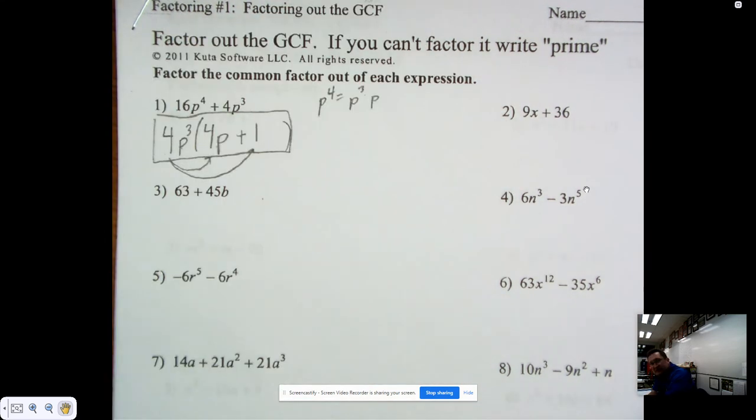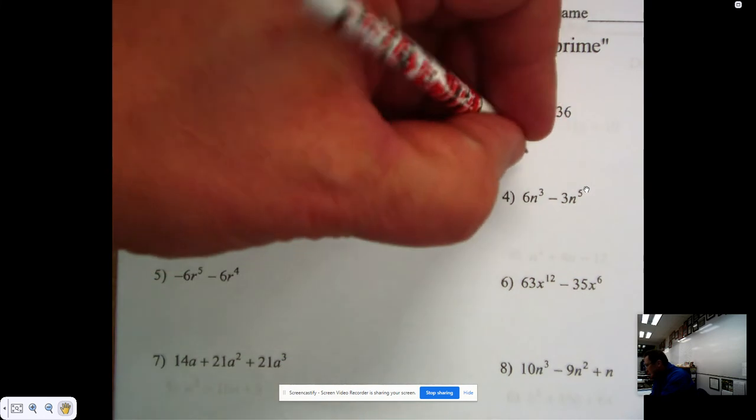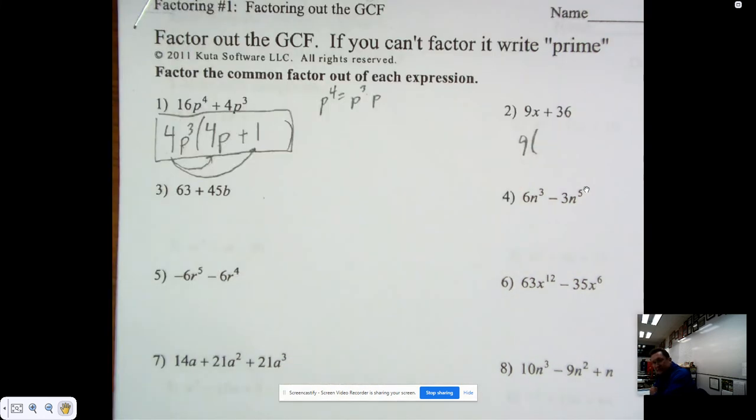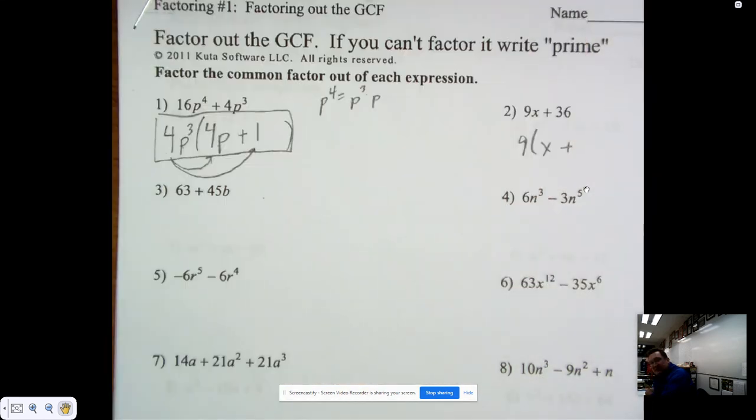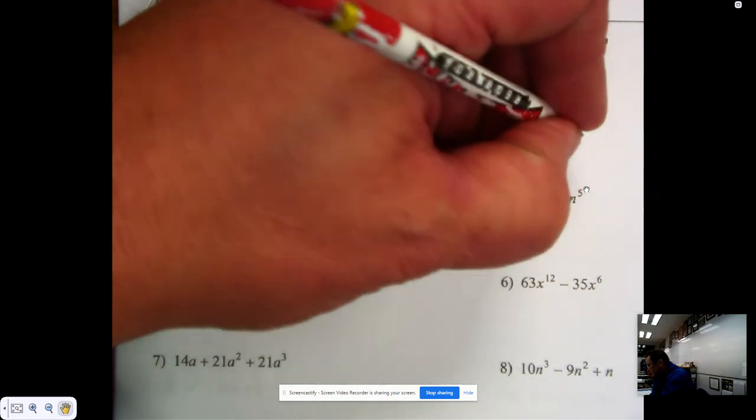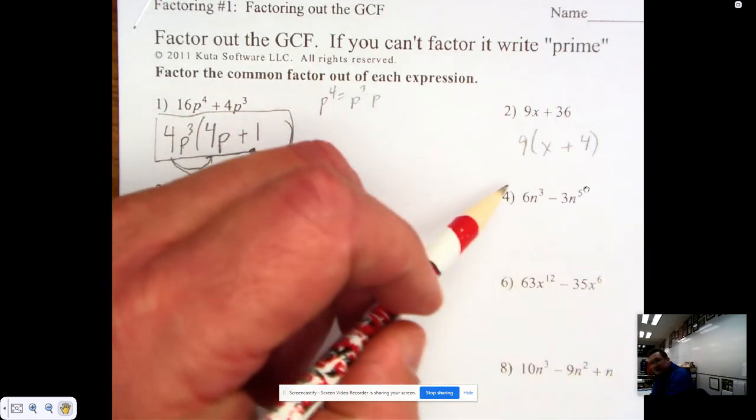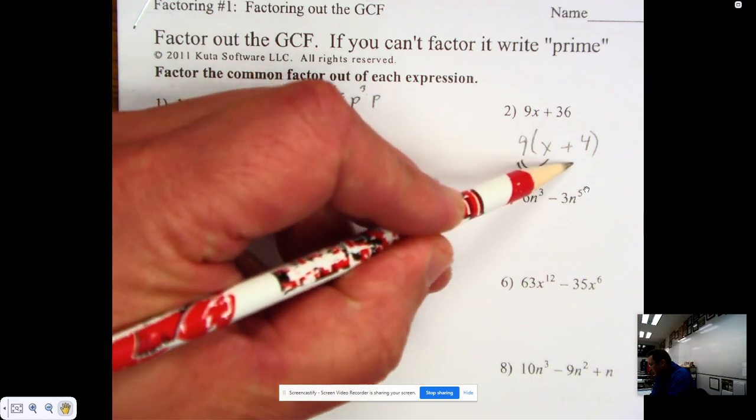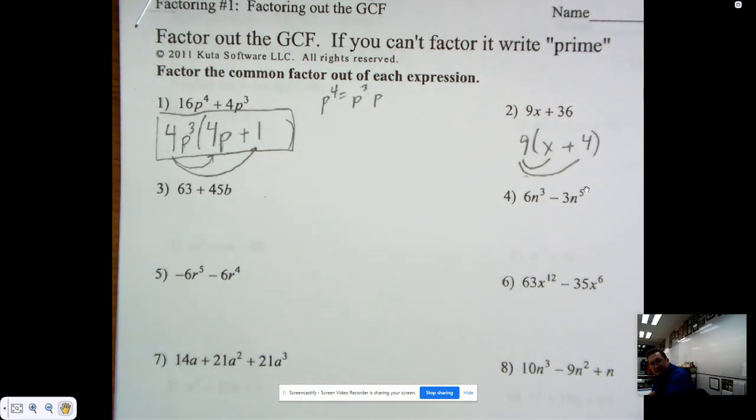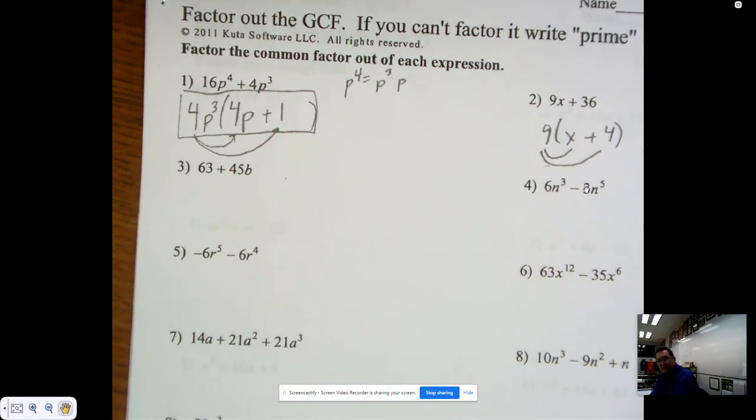On number 2, we ask ourselves: what's the greatest common factor between 9 and 36? We would answer that as 9. When we take a 9 out of 9x, we have x. When we take a 9 out of 36, we have 4. Again, we could check our answer. If we multiply this out, we'd have 9x plus 36.